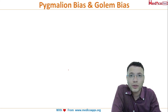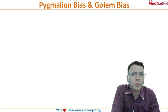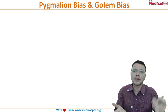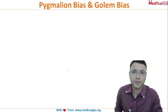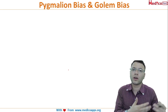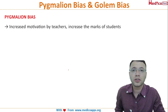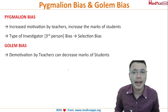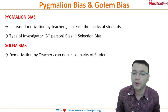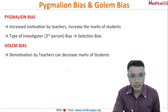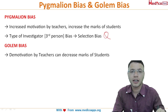Finally, there are Pygmalion and Golem biases. Pygmalion represents a motivating teacher whose positive influence affects student outcomes, while Golem represents a demotivating teacher used to study negative influence. The influence of the teacher on results is named accordingly — Pygmalion is the motivator, Golem is the demotivator. This is a type of selection bias.